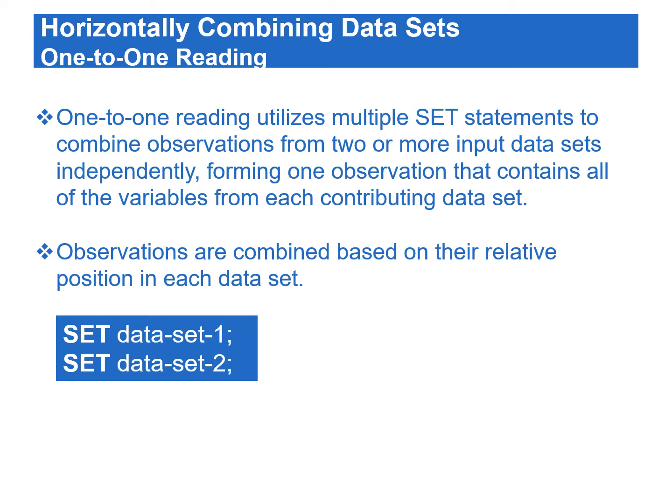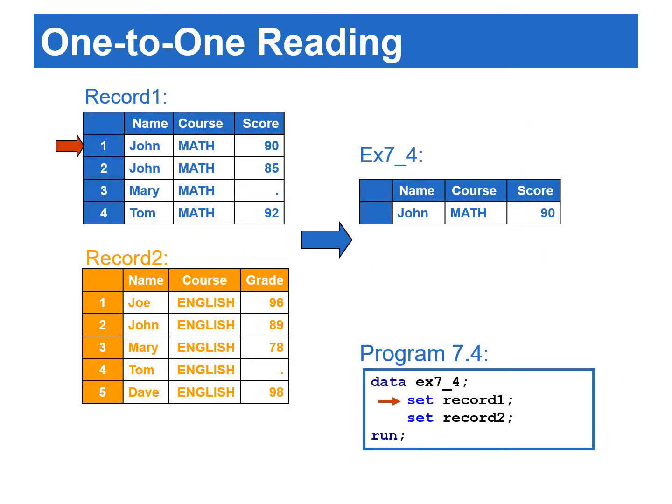One-to-one reading utilizes multiple set statements to combine observations from two or more input data sets independently, forming one observation that contains all of the variables from each contributing data set. Observations are combined based on their relative position in each data set. The number of observations in the combined data set is equal to the number of observations in the smallest input data set. If the input data sets share common variables, only the values read in from the last data set are kept.